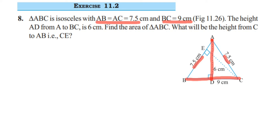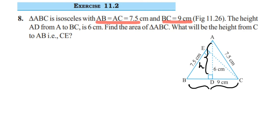AD we know which is 6 cm and we have to find the other height CE. To find the height, we know the formula: area of a triangle is half into base into height. So we know the height and base, we'll substitute into the formula and first get the area of the triangle.